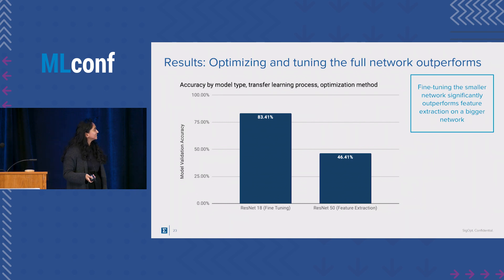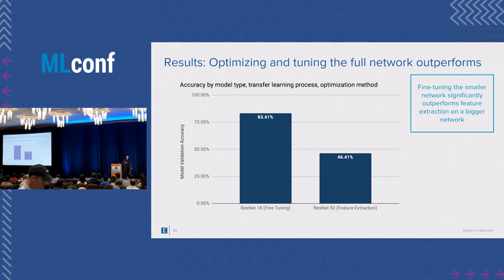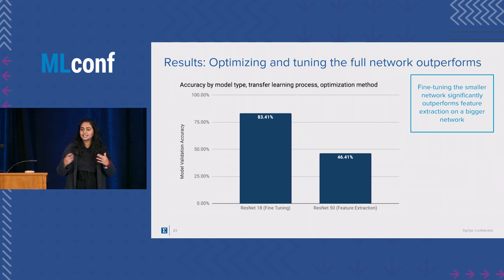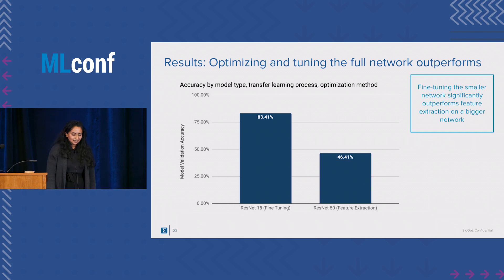So what are the results? We found, surprisingly, that fine tuning a shallower network without any optimization drastically outperforms feature extraction as a strategy for this dataset. What that really means is that the pre-trained ImageNet 1000 model is actually quite dissimilar to Stanford CARS — a great thing to learn about your data.